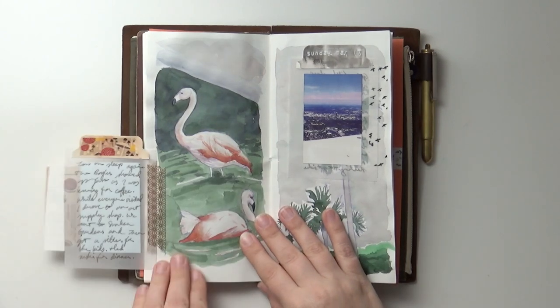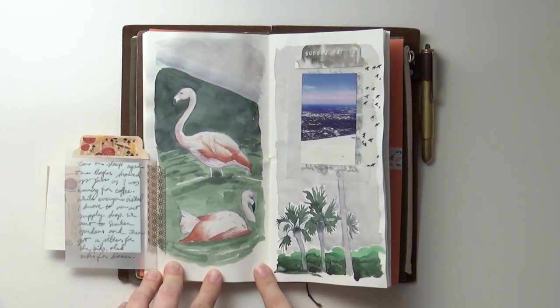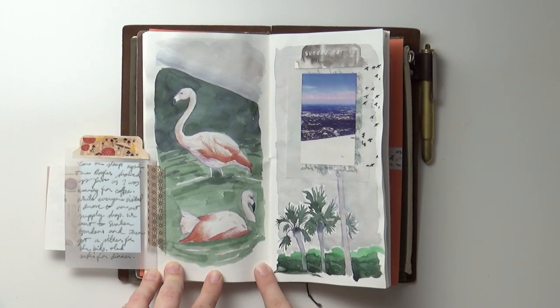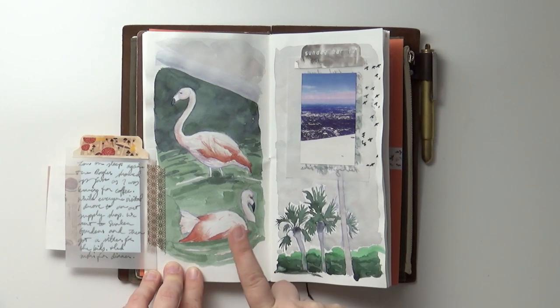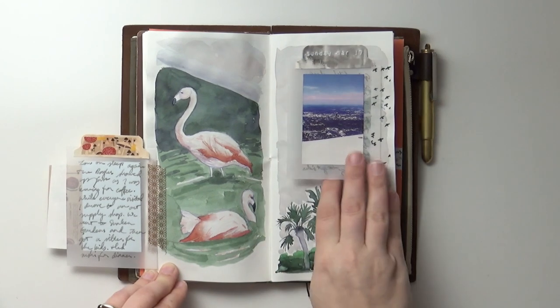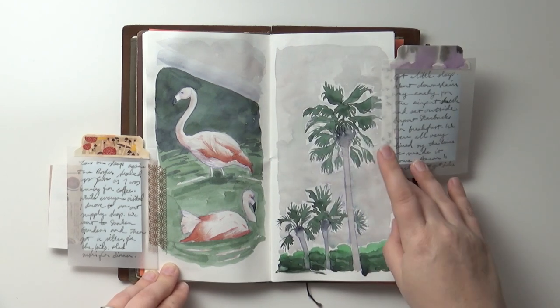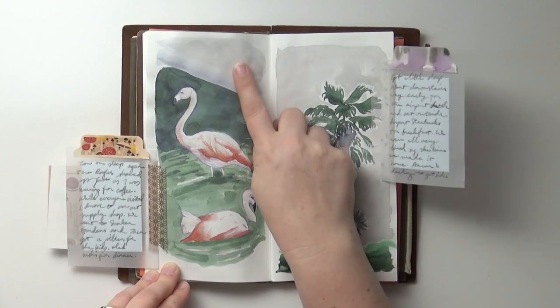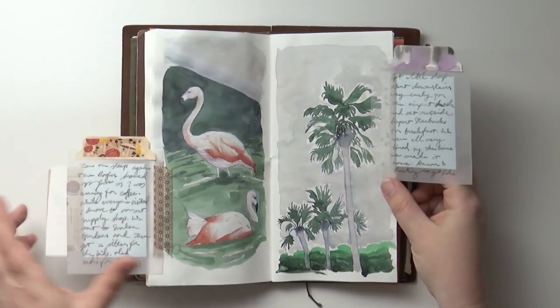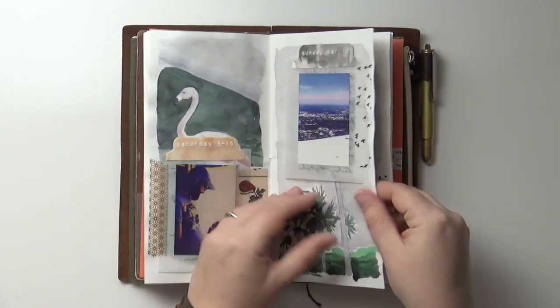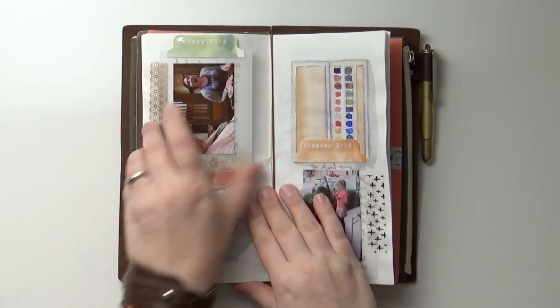We went to sunken gardens which was amazing and I highly recommend it. It's in St. Petersburg. I painted some flamingos and then this was the morning that we left. If there's a gray in my journal, it's probably shadow violet. Both that and that are shadow violet.